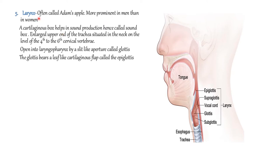Moving on to the larynx, which is also known as Adam's apple and is more prominent in men than women. It is also known as the soundbox because it helps in producing sound as it contains vocal cords. The laryngopharynx opens into the larynx through an opening known as the glottis. It is guarded by a leaf-like cartilaginous structure known as the epiglottis, so that food can easily pass into the esophagus. When swallowing occurs, the epiglottis closes the larynx so the respiratory system is closed and food enters the esophagus.